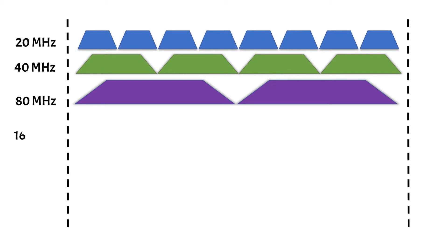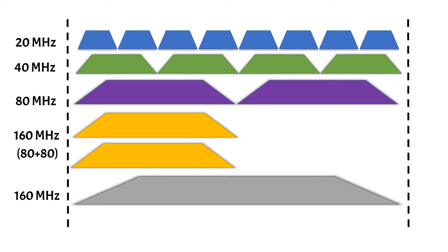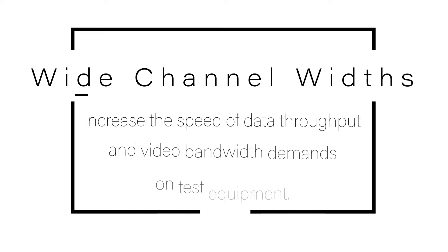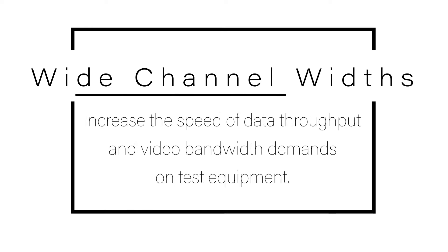Wi-Fi 6, for example, can also utilize two non-contiguous 80 megahertz channels as one, and continuous 160 megahertz channels. Wide channel widths increase the speed of data throughput, but also increase the video bandwidth demands on test equipment.